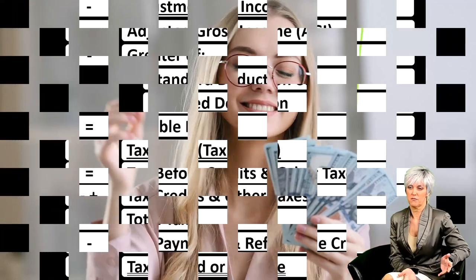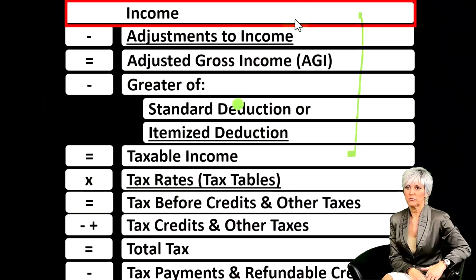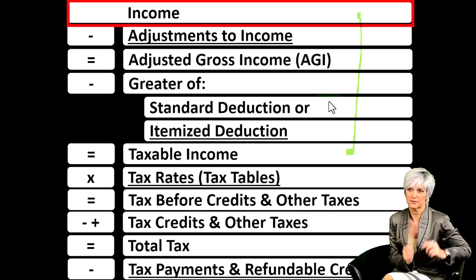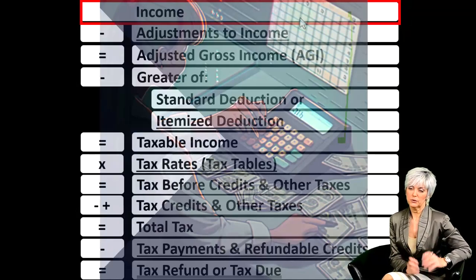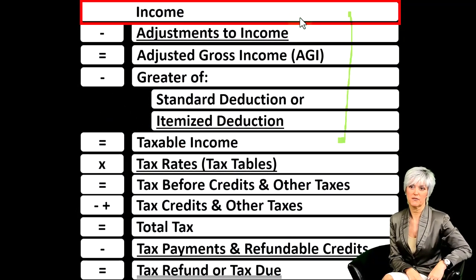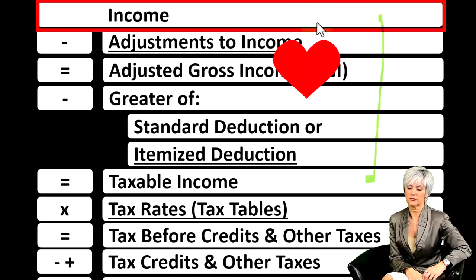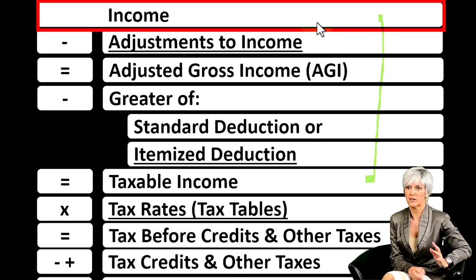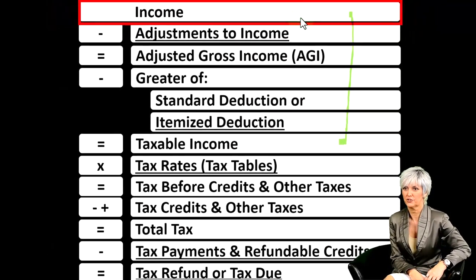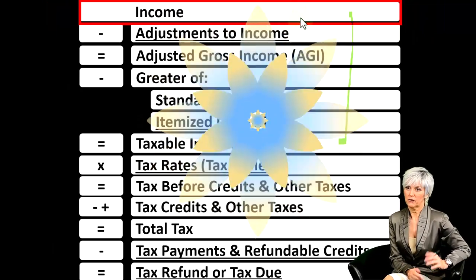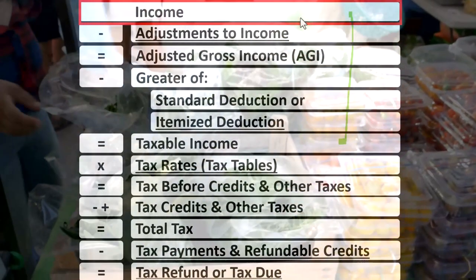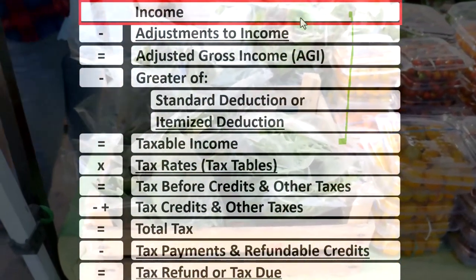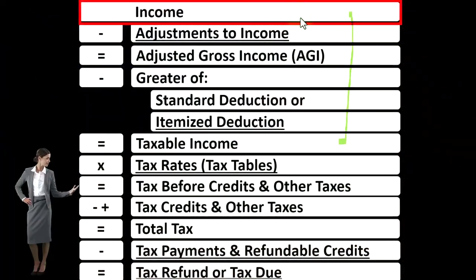Everything is flipped on its head — we want taxable income to be as low as possible, as opposed to normal income statements where we want net income as high as possible. That means we would like to exclude income if legally possible, and we would like our deductions — similar to expenses — to be as high as possible. Now, when we think about the income line on Form 1040, business income feeds in from another schedule — the Schedule C for small businesses.